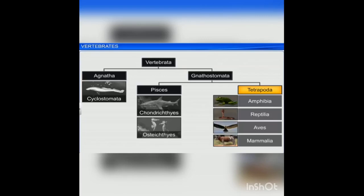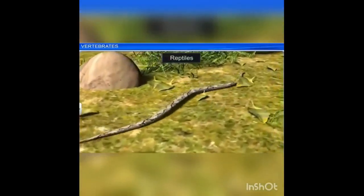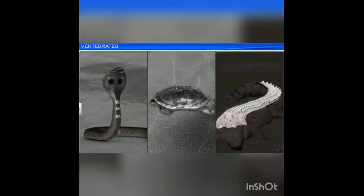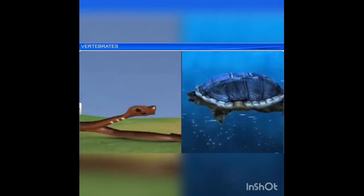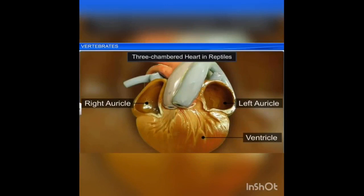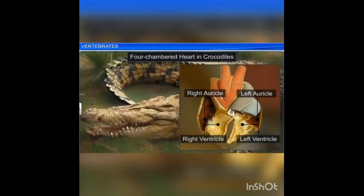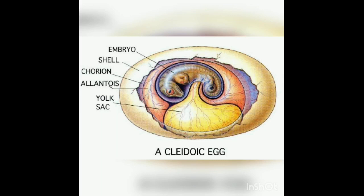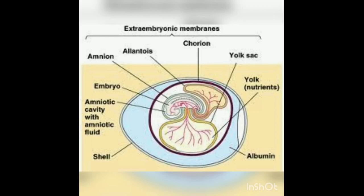Next we move on to class Reptilia. They are mostly terrestrial animals and the body is covered by dry, cornified skin with epidermal scales or scutes. They have an external ear opening and the tympanum represents the ear. Except snakes, reptiles have two pairs of limbs. All are cold-blooded animals. The heart is three-chambered, but in crocodile it is four-chambered with two auricles and two ventricles. Some reptiles like snakes and lizards shed their skin.